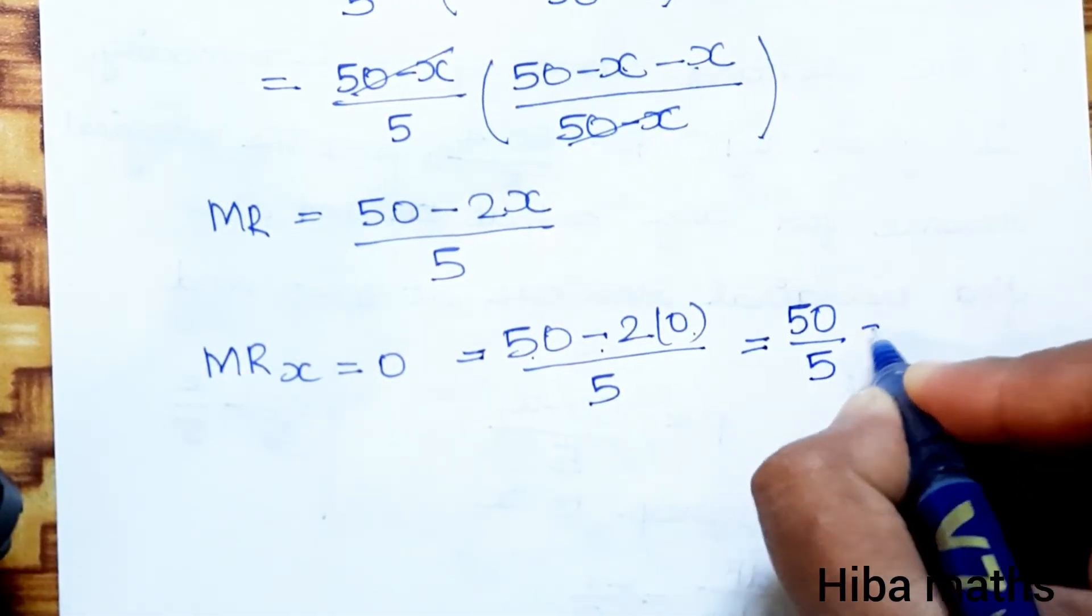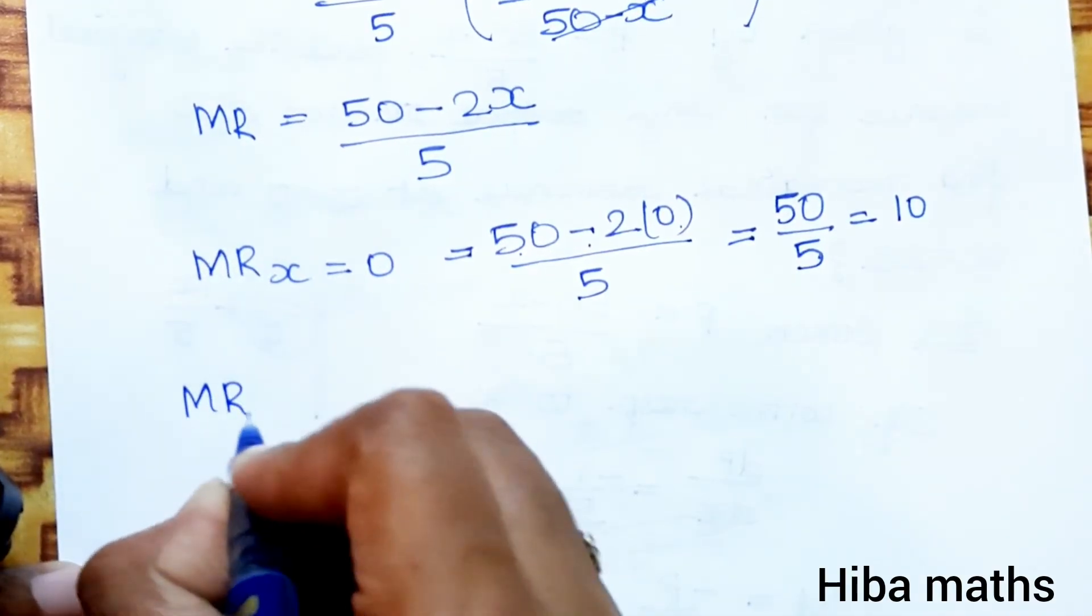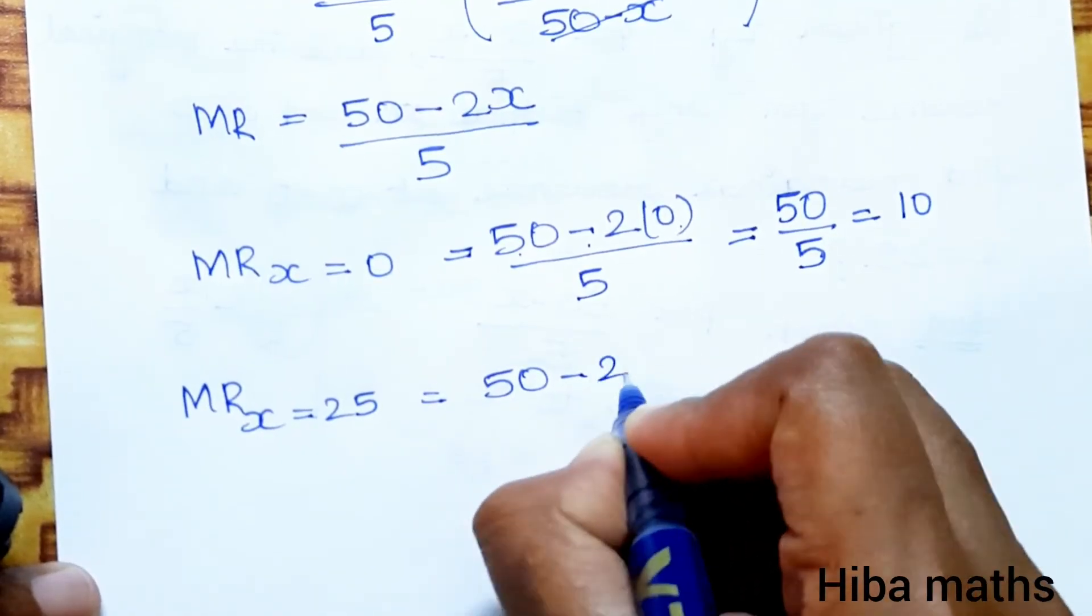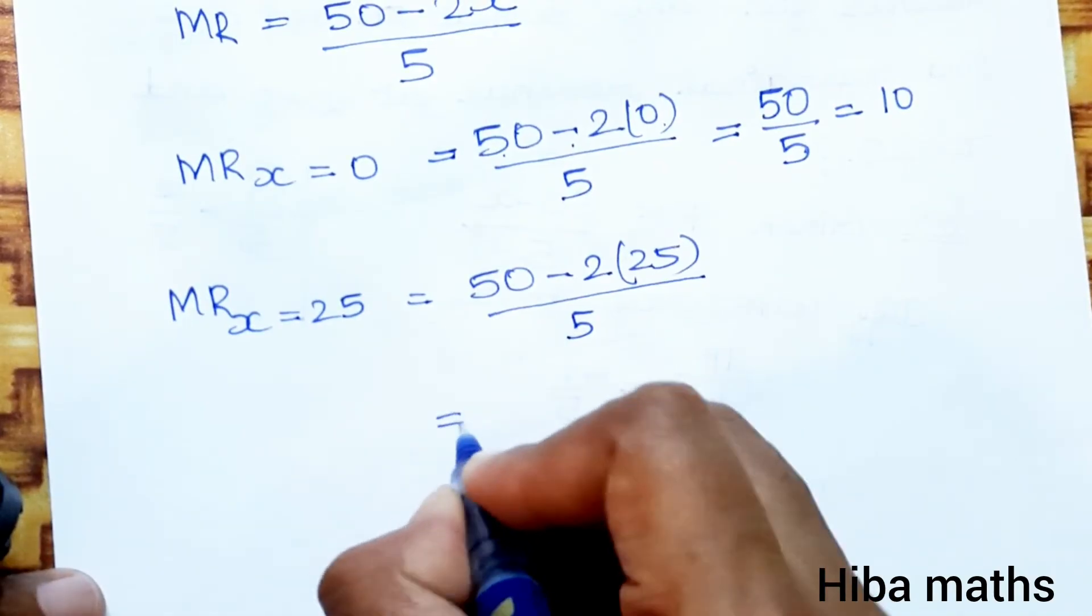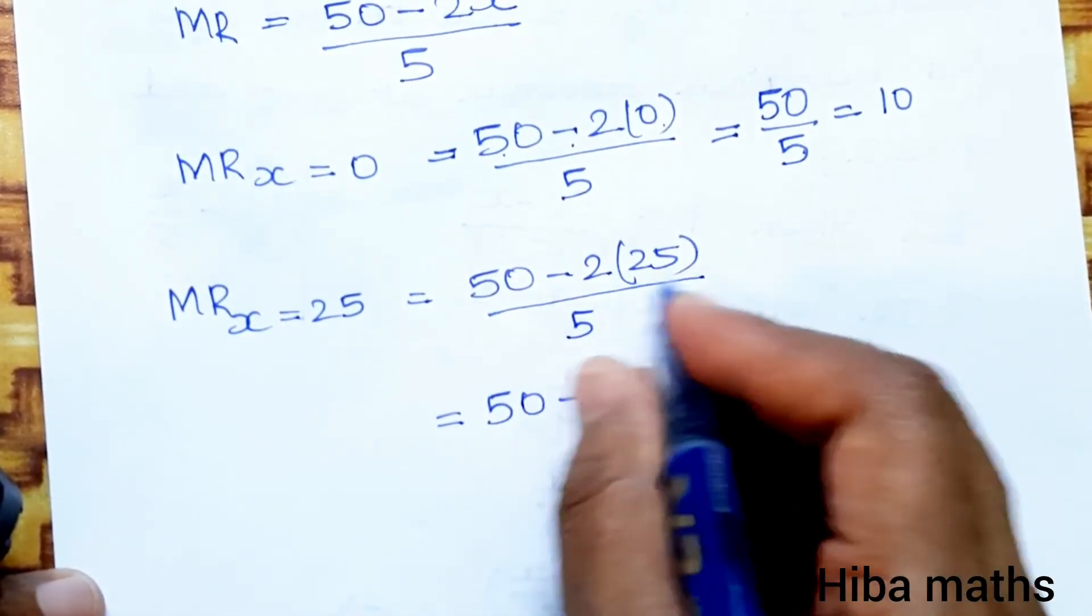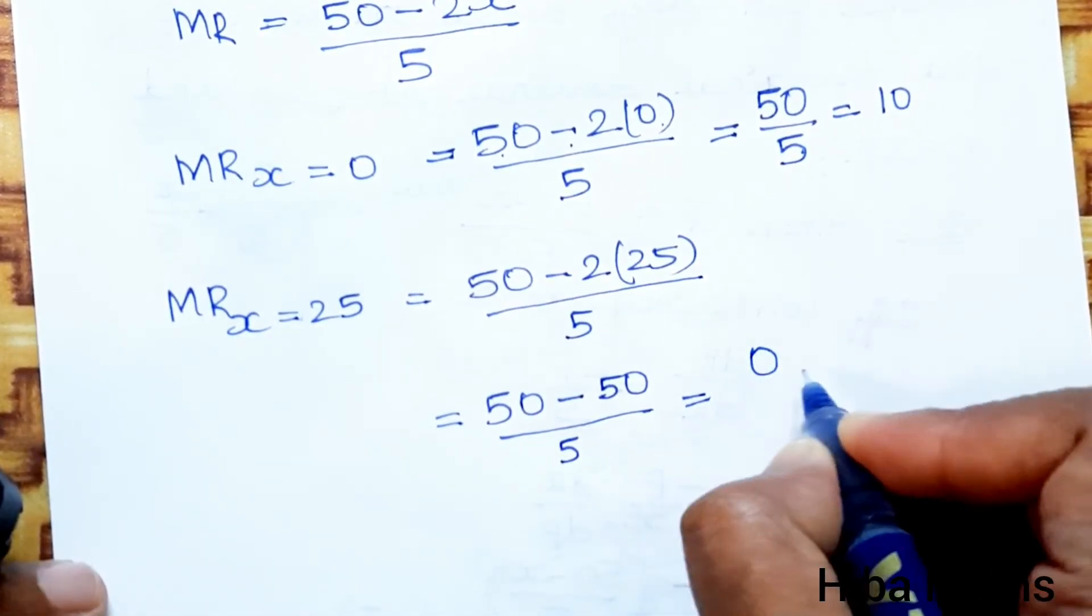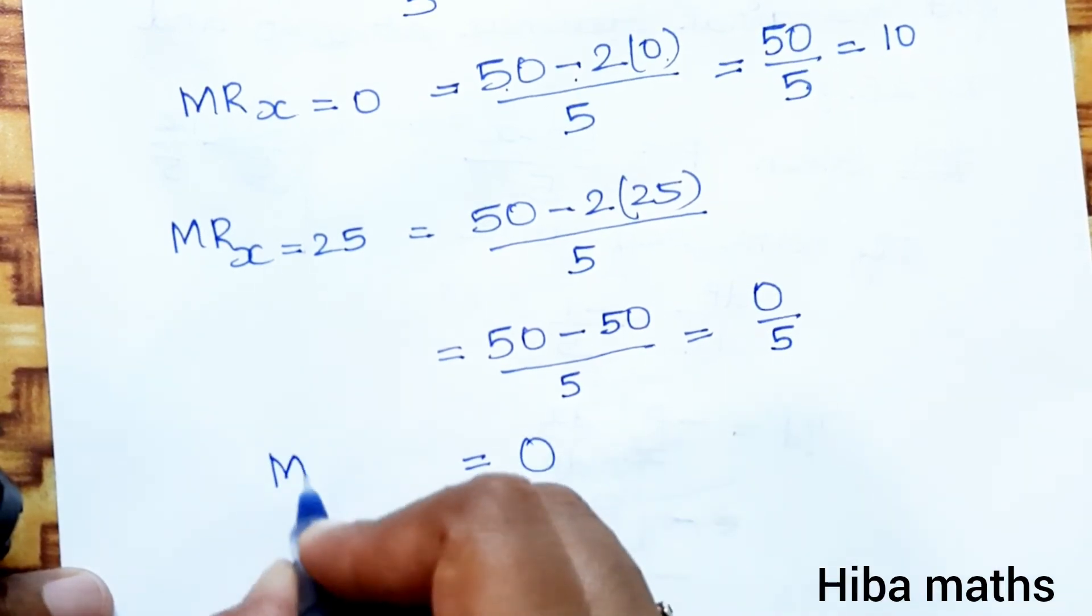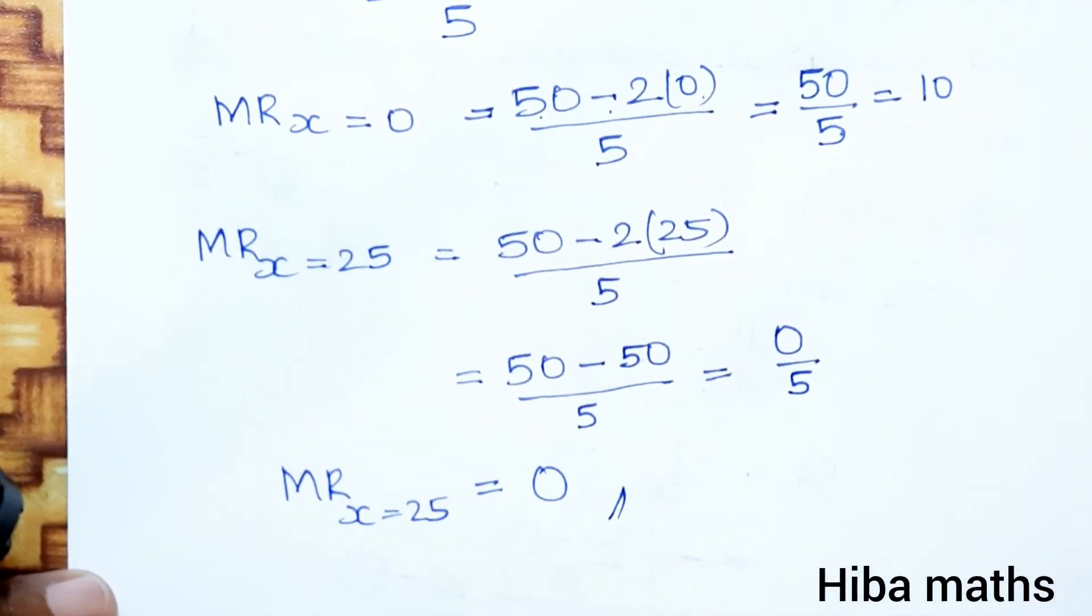Marginal revenue when x equals 25: MR equals 50 minus 2 into 25 divided by 5. That equals 50 minus 50 is 0, 0 by 5 is 0. This is the final answer when x equals 25. Everyone understand? If you have doubt, comment section. Thank you so much for watching.